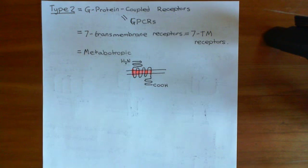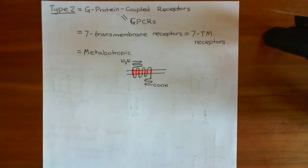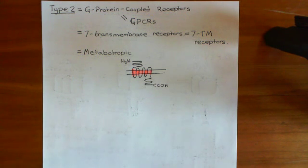These receptors are generally quite fast; they will generally elicit responses which occur in seconds. I should note that ligand-gated ion channels mediate the fastest responses — fast transmission between neurons occurring within milliseconds. G-protein-coupled receptors are the next closest, and they are quite fast, occurring in seconds.